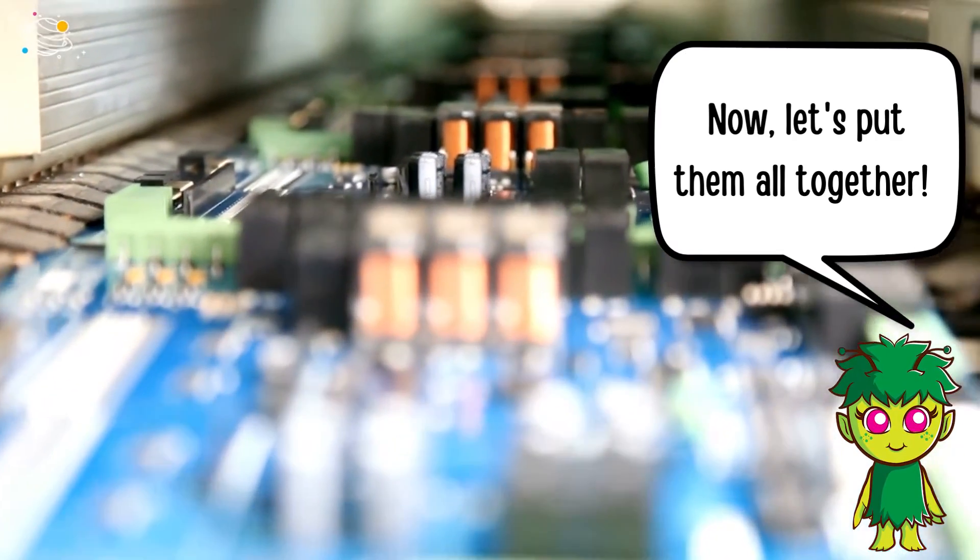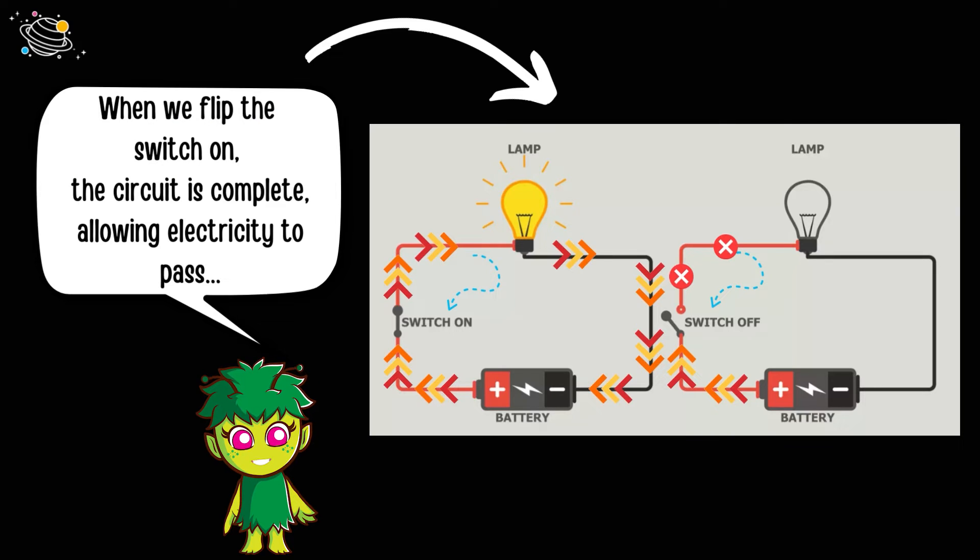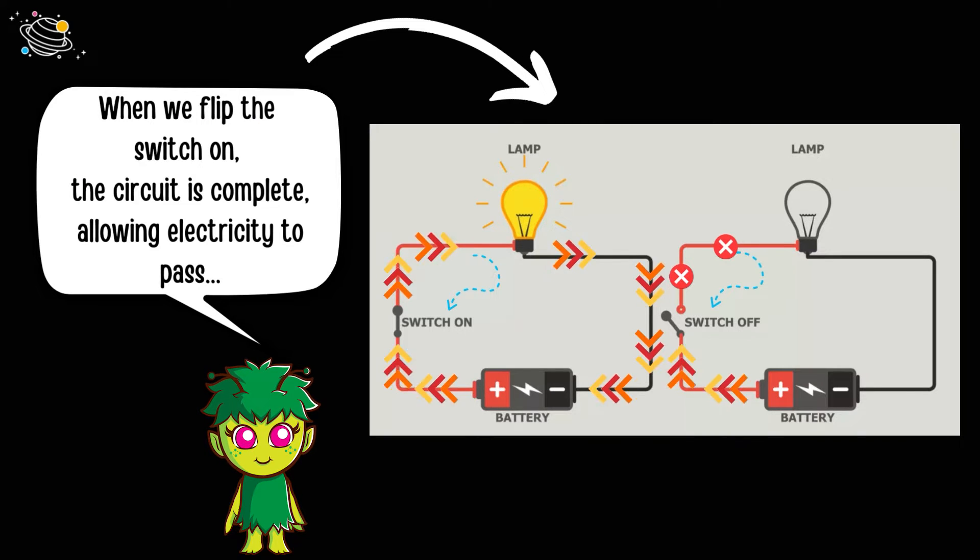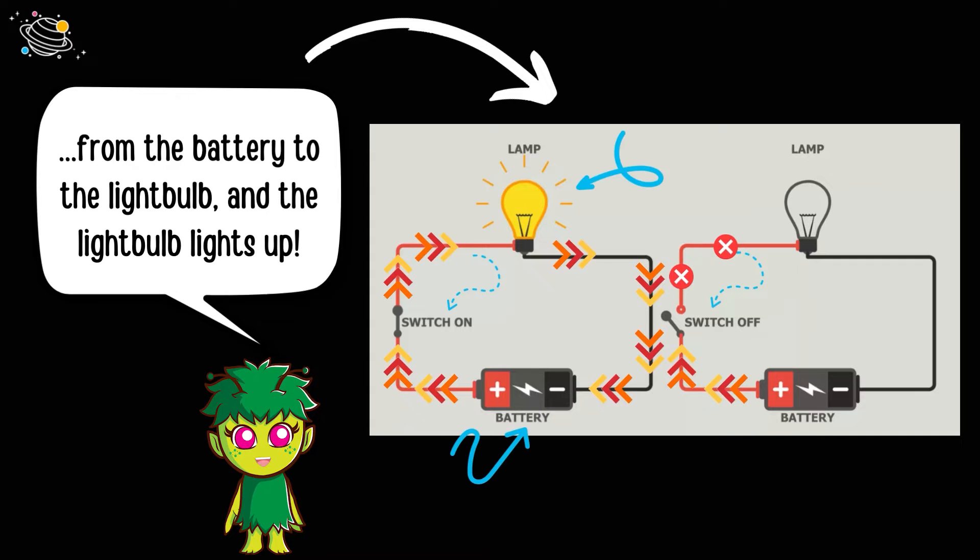Now let's put them all together. When we flip the switch on, the circuit is complete, allowing electricity to pass from the battery to the light bulb, and the light bulb lights up.